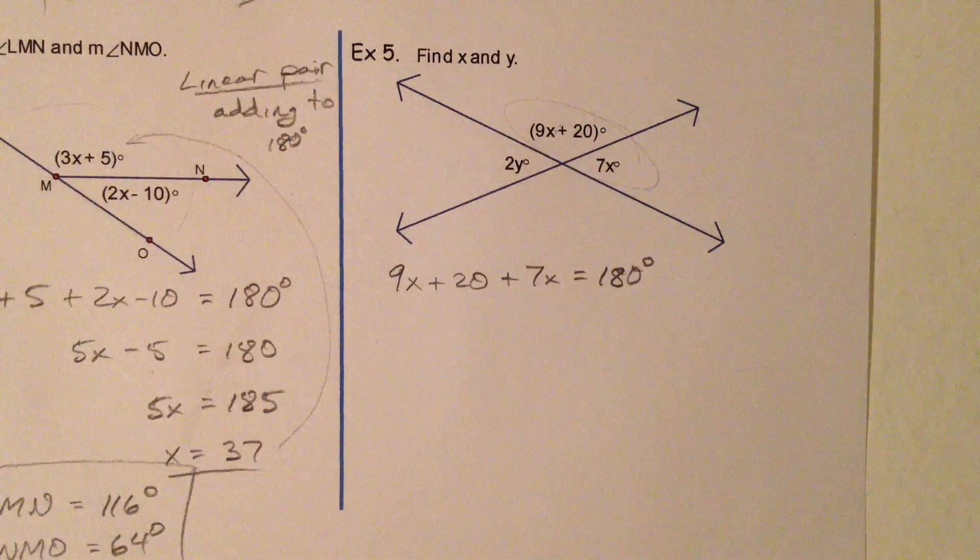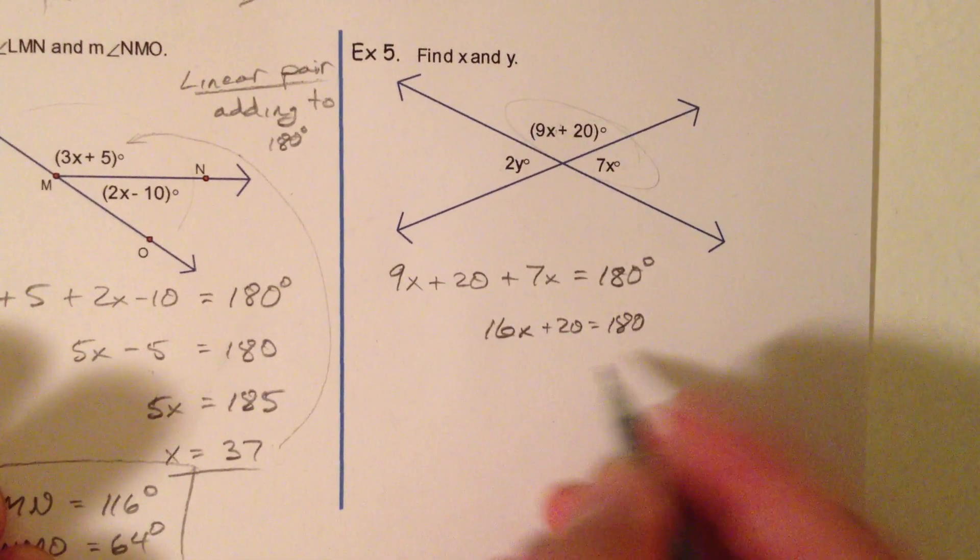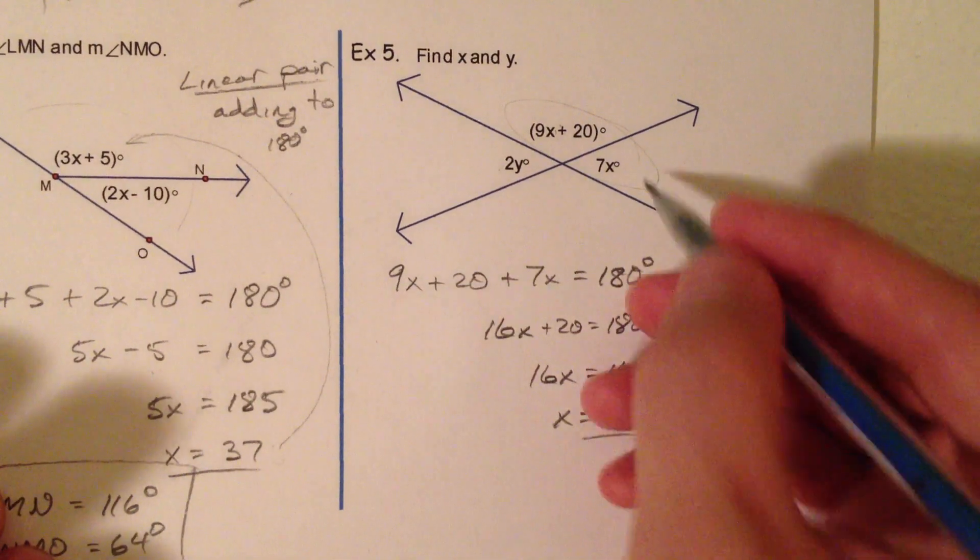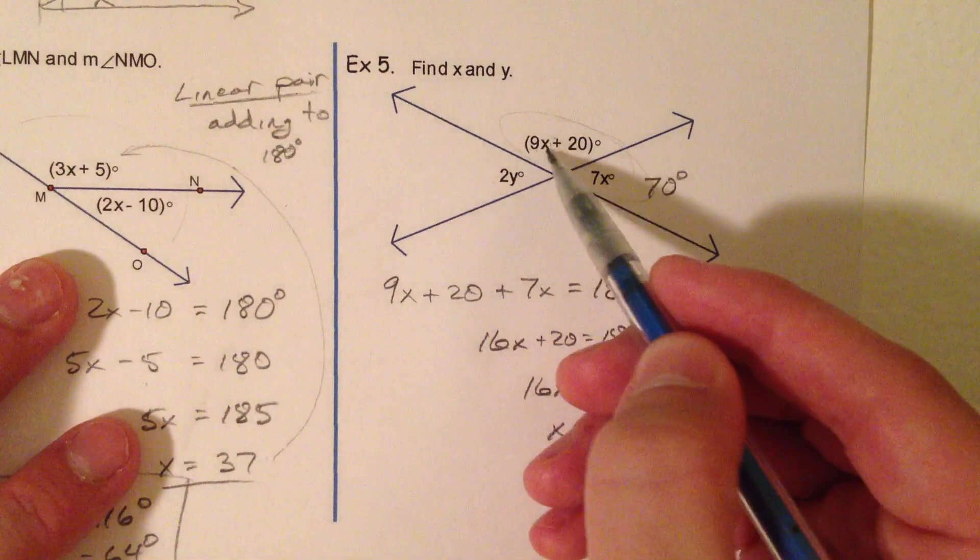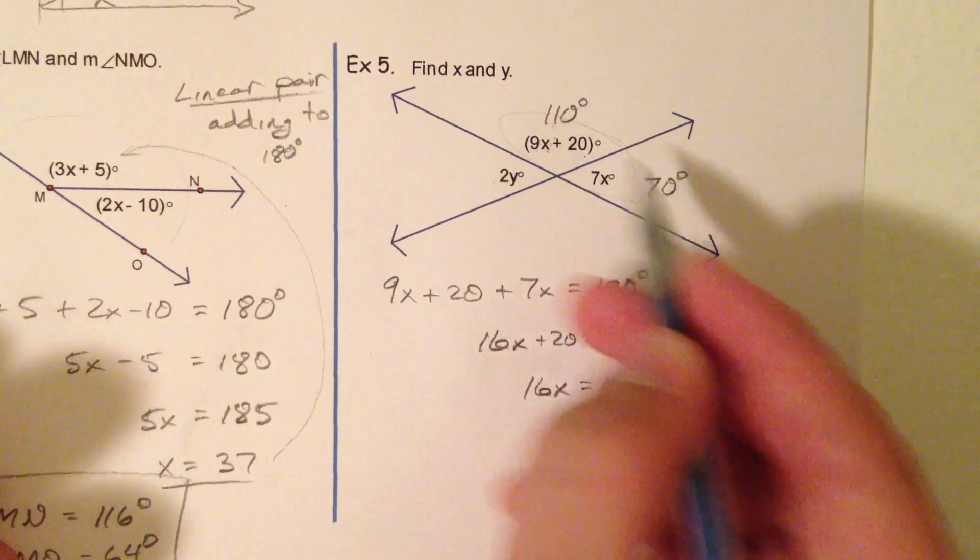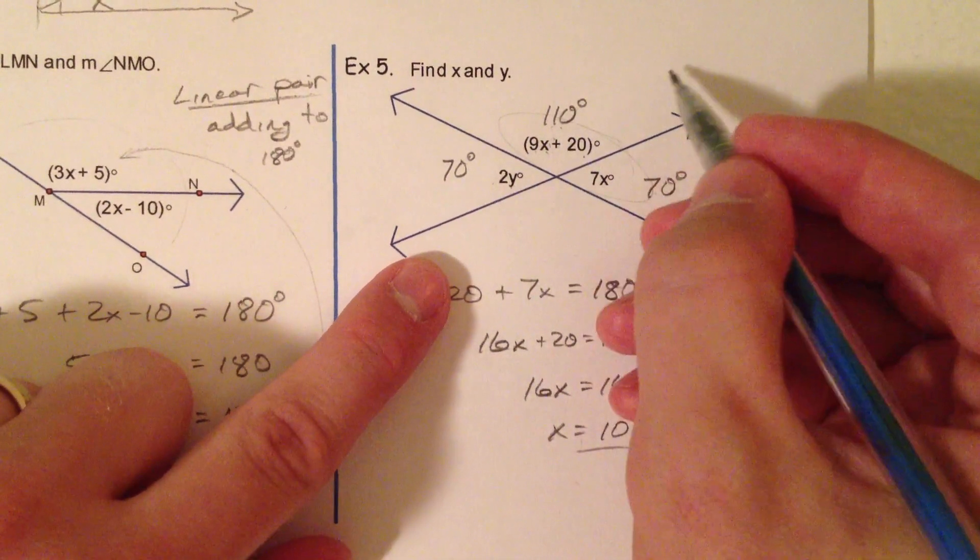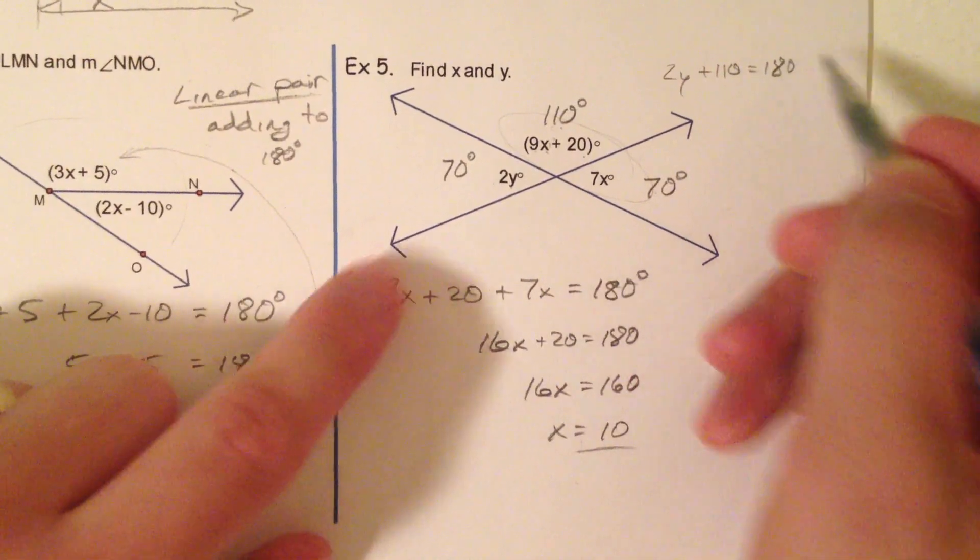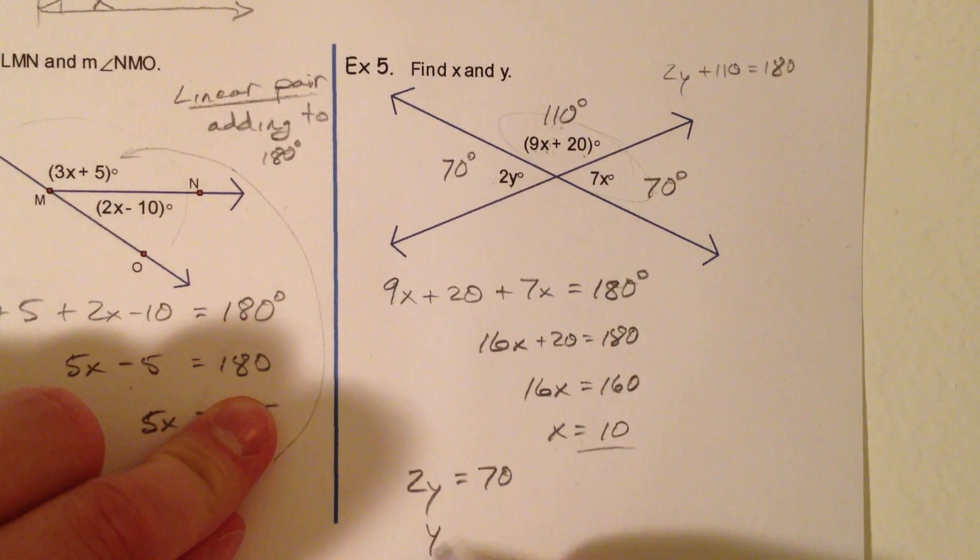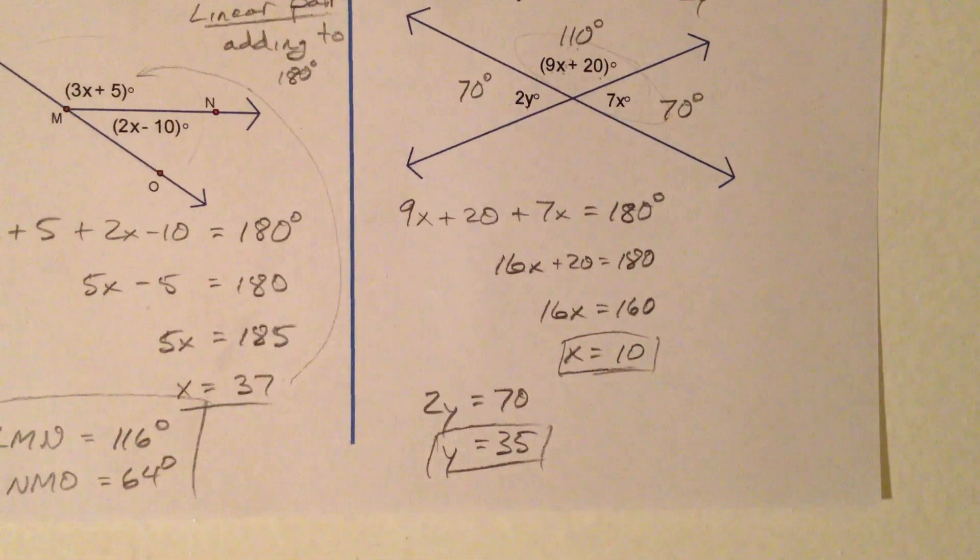9X and 7X, 16X plus 20. If you subtract that 20, you get 160. And then X should be 10. So that means this is 70. 9 times 10 plus 20, 90 plus 20 is 110, which makes sense because those two add to 180 now. So that must mean that this is equal to 70. So two things you can do. Either you could say 2Y plus 110 equals 180, or you could say 70 was equal to 2Y. So I'm just going to say that one. So then divide by 2, you must get Y equals 35. X equals 10, Y equals 35. And there you have it.